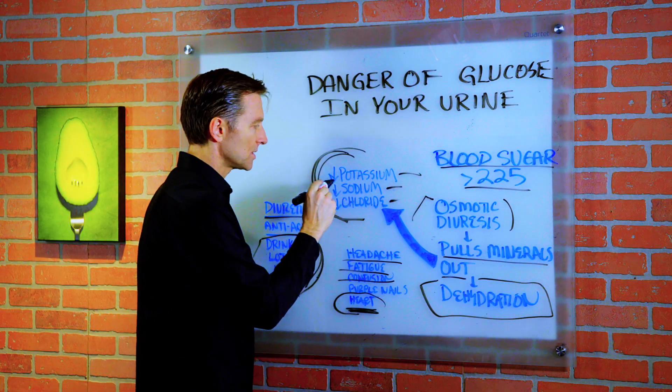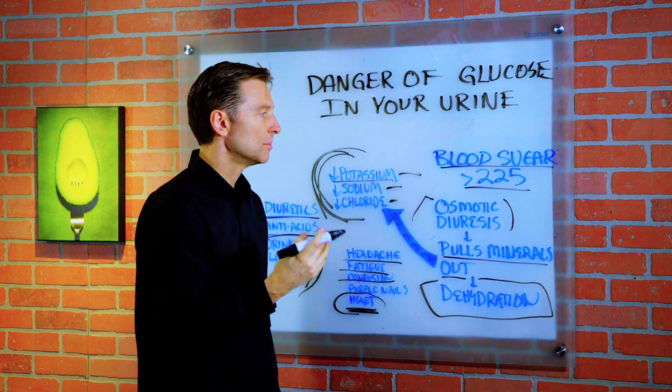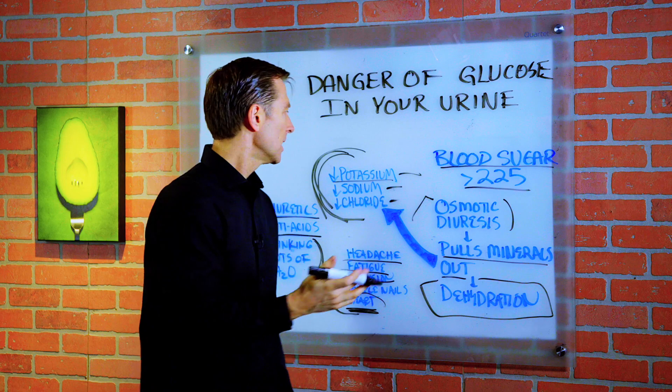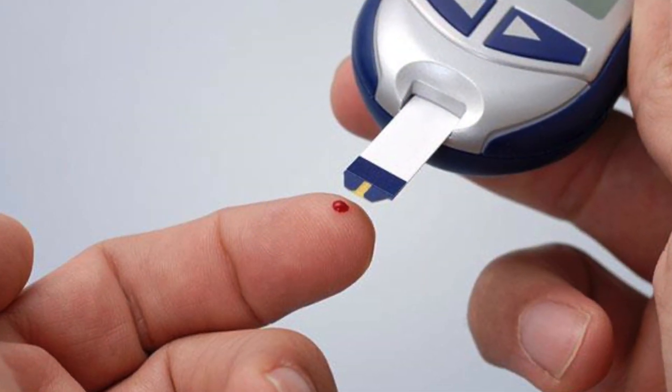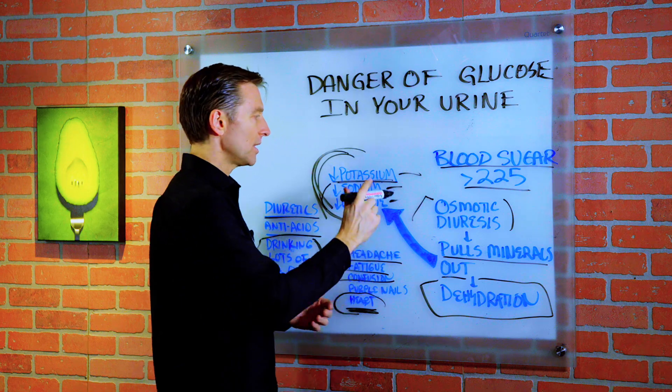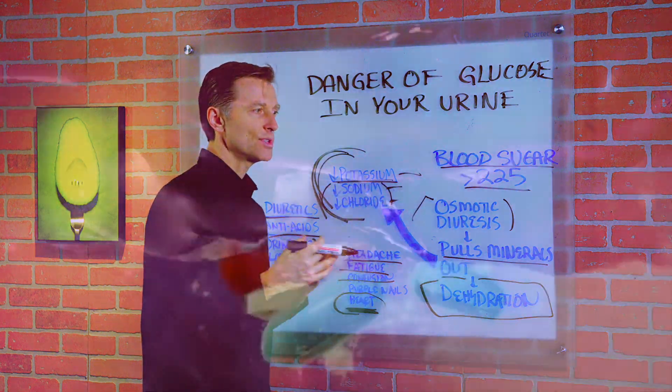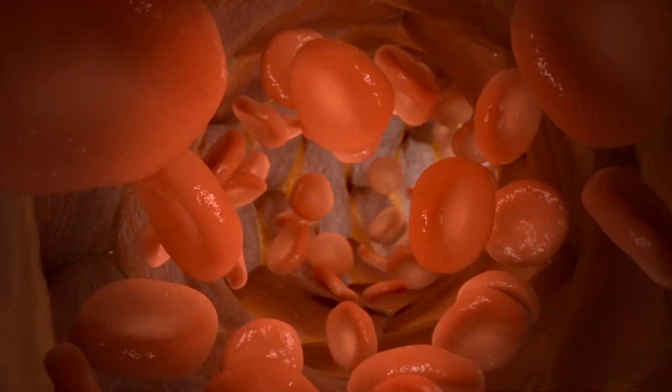You have to understand that we need these minerals to help reverse the blood sugar problem in the first place. In fact, if you take potassium, it actually can help your blood sugars improve. Also, one of the symptoms of a low salt diet is insulin resistance. So having these minerals with salt and potassium and magnesium are crucial in helping your blood sugars.